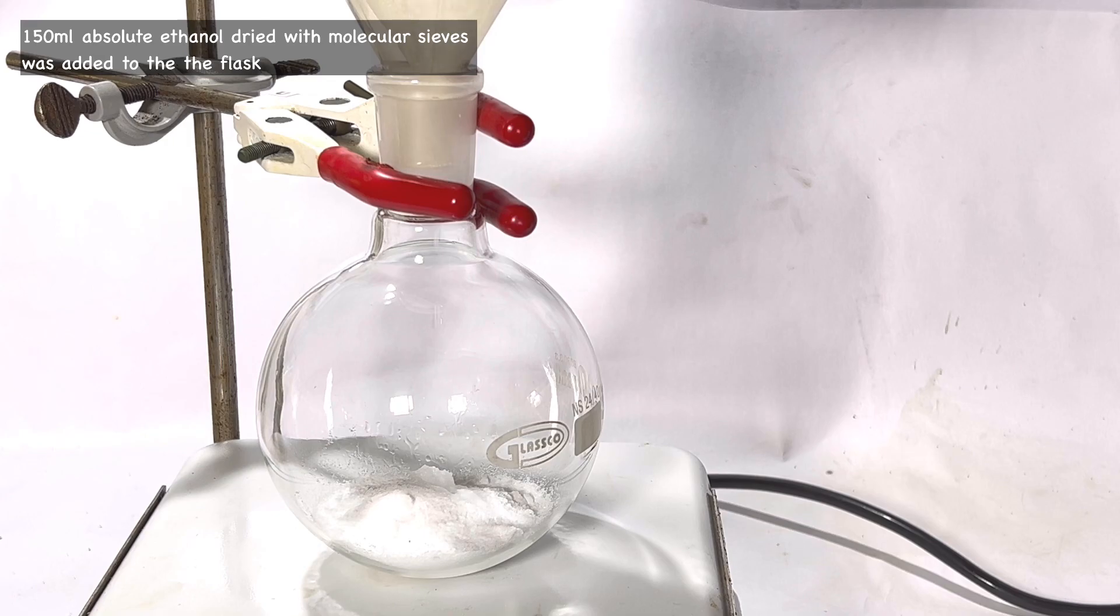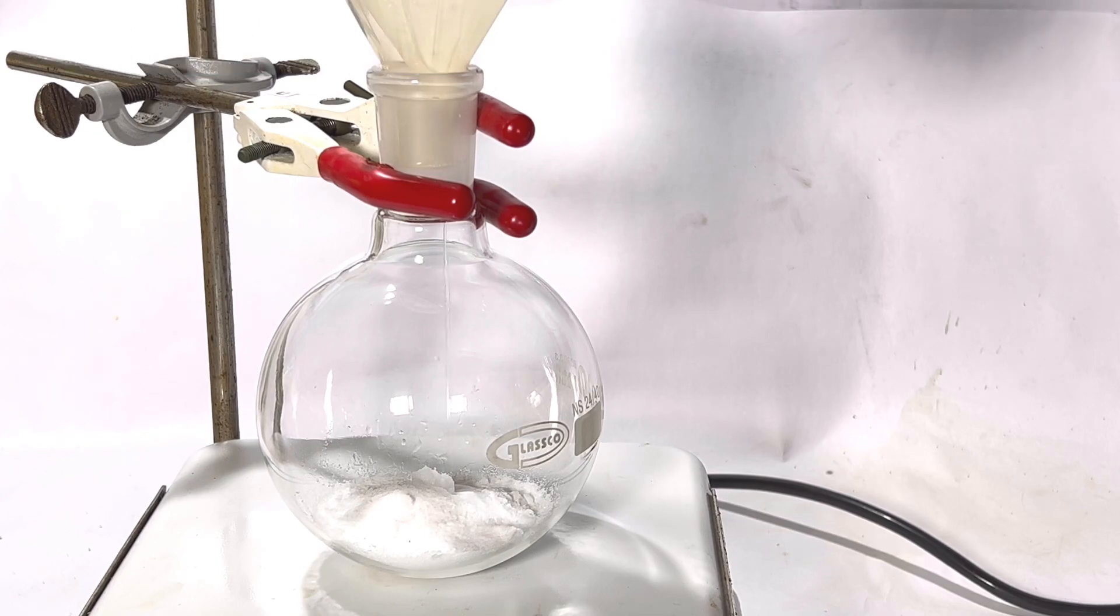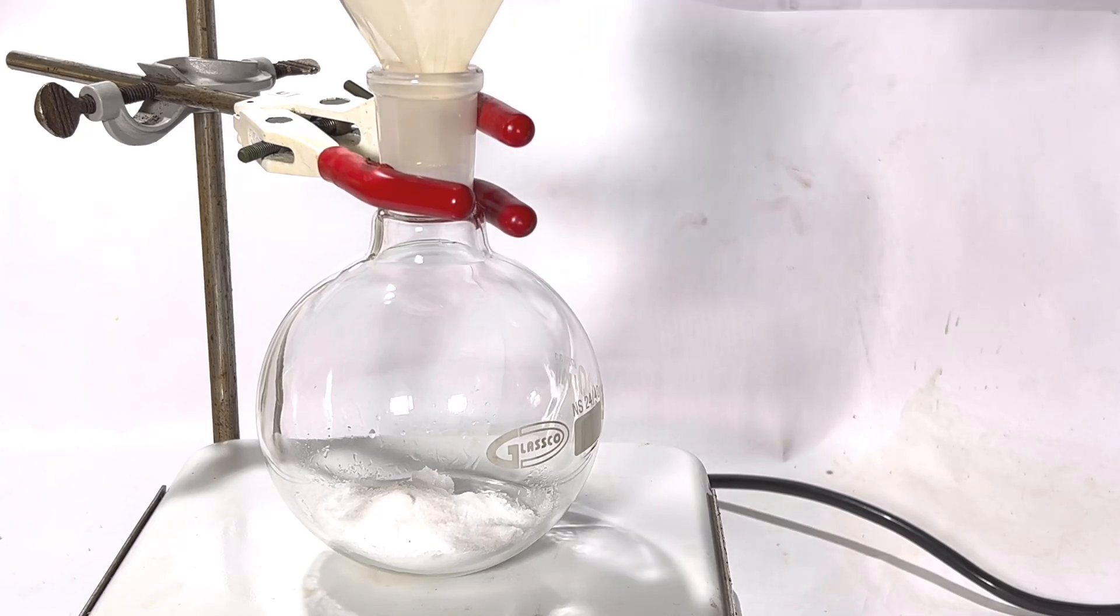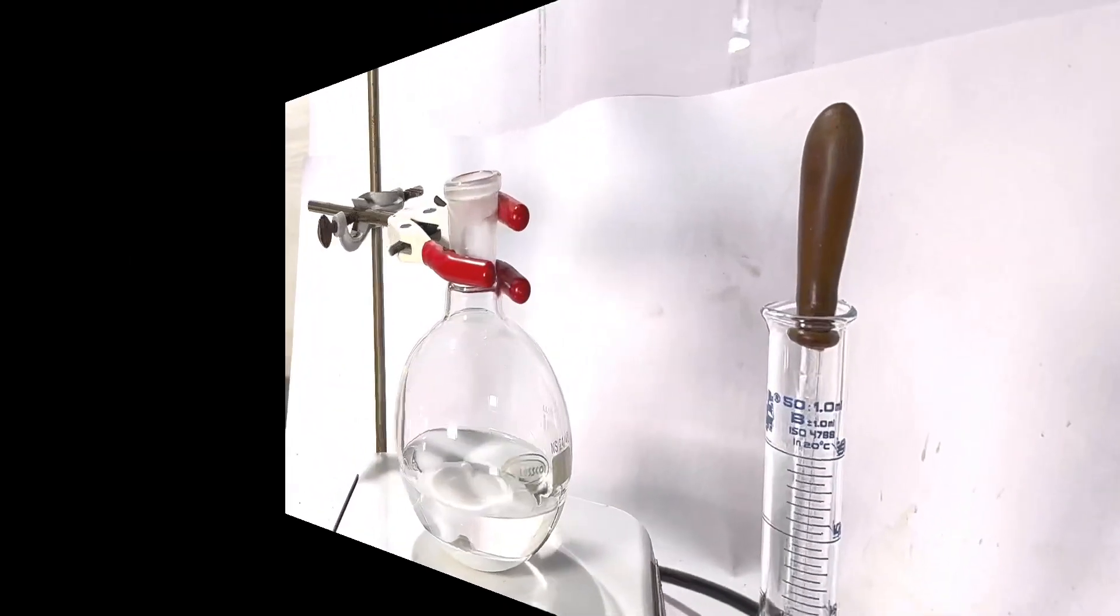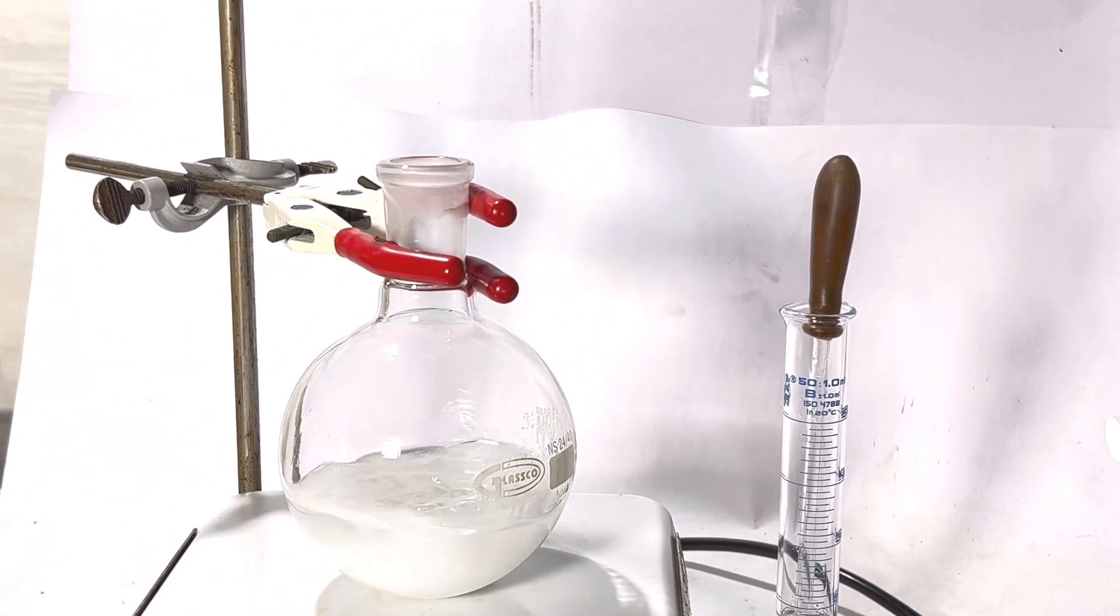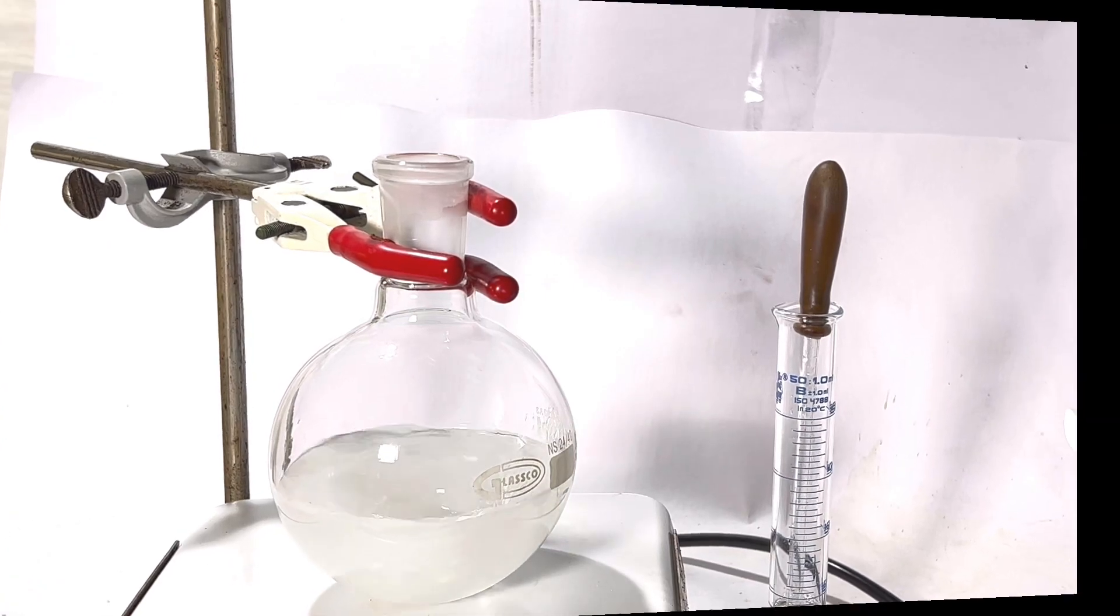Now 150 milliliters of molecular sieve dried absolute ethanol was transferred to the flask. Since the ethanol contained minute particles from the molecular sieves, a simple filtration was conducted and the filtrate was collected in the round bottom flask containing the malonic acid. After all the ethanol was transferred to the flask, stirring was turned on to dissolve the compound. Malonic acid dissolves in ethanol resulting in a clear solution.